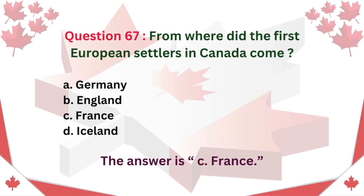Question 67. From where did the first European settlers in Canada come? A. Germany B. England C. France D. Iceland. The answer is C. France.